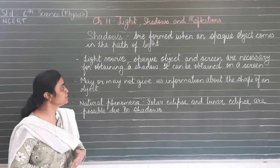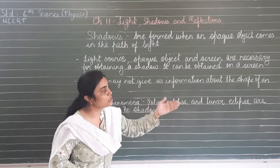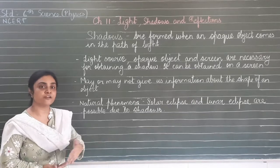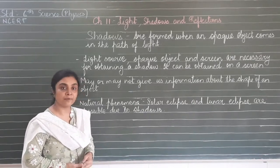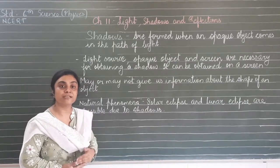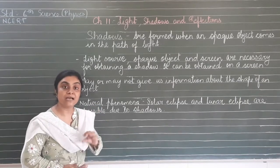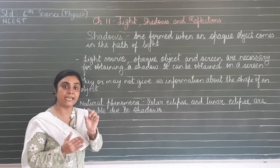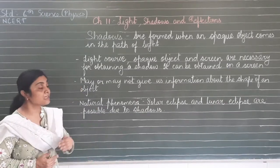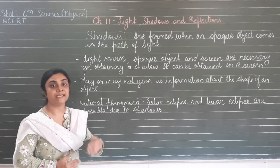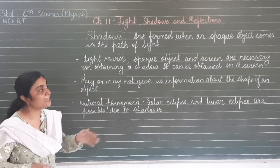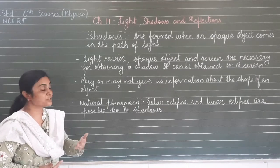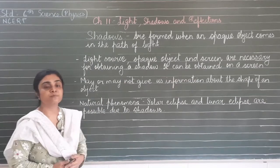Shadow may or may not give us information about the shape of an object. Sometimes, looking at a shadow, we can identify the shape of the object. But sometimes it does not give that information. For example, if a coin is placed face-on in the path of light, we see a round shape. But if the edge of the coin is placed in the path of light, we cannot properly identify that the coin is round. So a shadow may or may not reveal the shape of an object.